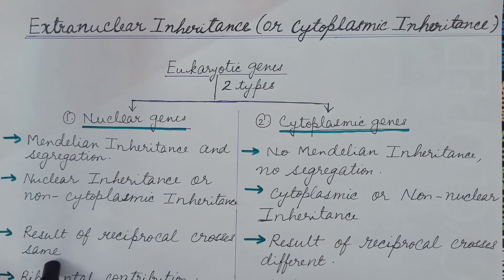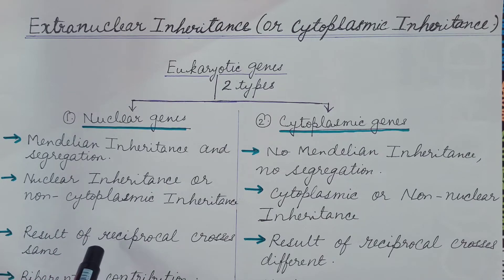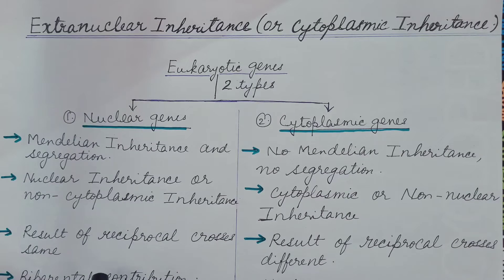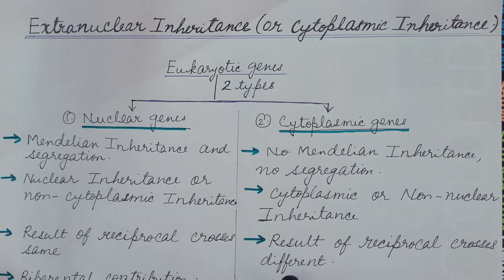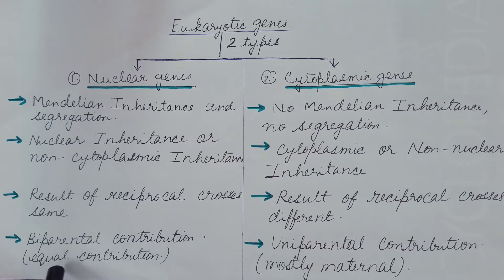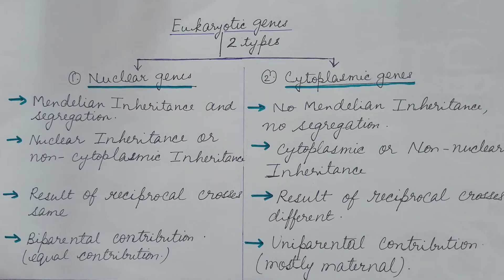The result of reciprocal crosses in the case of nuclear genes are the same. If we take female gamete from plant one and male gamete from plant two, the progeny will be the same as if done vice versa. But in the case of cytoplasmic genes, the results of reciprocal crosses are different. Nuclear genes show biparental contribution, with both parents contributing equally, whereas cytoplasmic genes show uniparental contribution — either paternal or maternal — but mostly maternal.